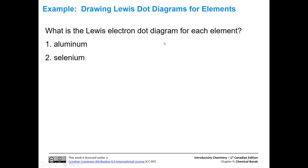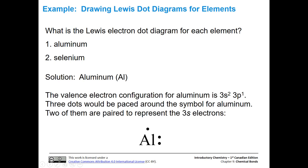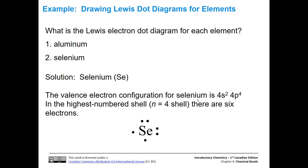Let's draw Lewis dot diagrams for aluminum and selenium. Aluminum has a valence configuration of 3s² and 3p¹. The core electrons are not represented, so we show the 3s pair and one unpaired p electron — the placement can vary. Selenium has six valence electrons. Paired for the 4s, then one electron in each of the three p orbitals, with one remaining electron pairing up in a p orbital. The Lewis dot diagram for selenium looks a lot like that for oxygen.